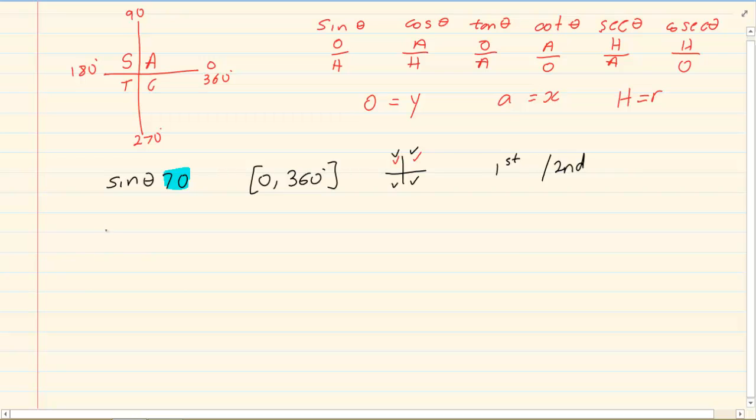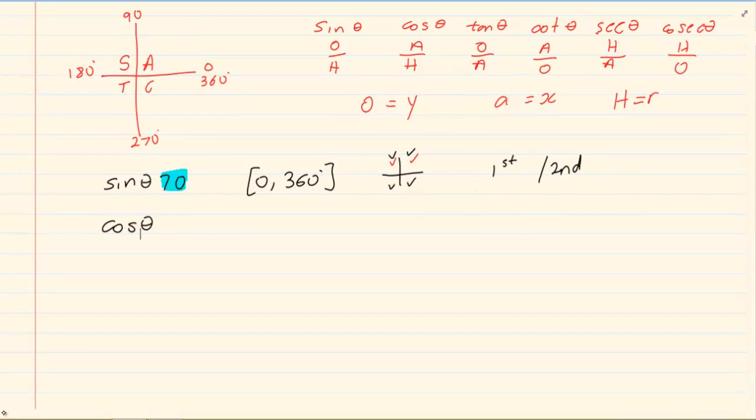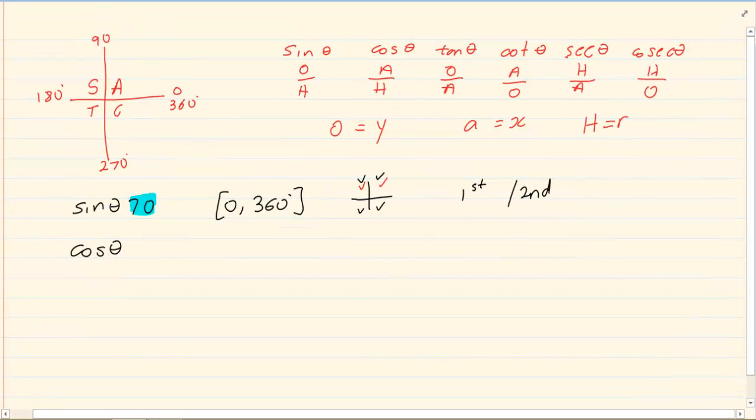Let's try another one. Let's say I am giving you cos theta is less than 0 and I am working between 90 and 360 degrees.